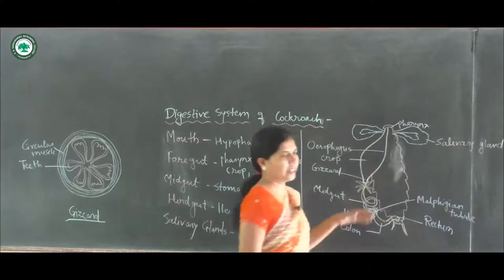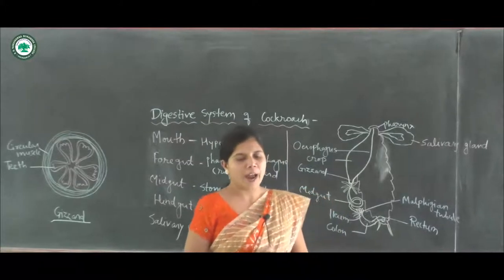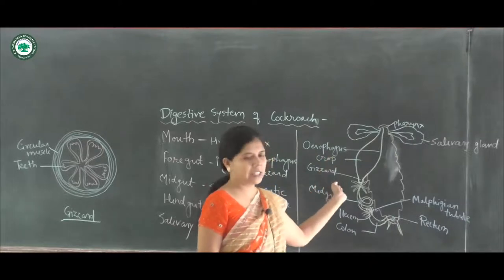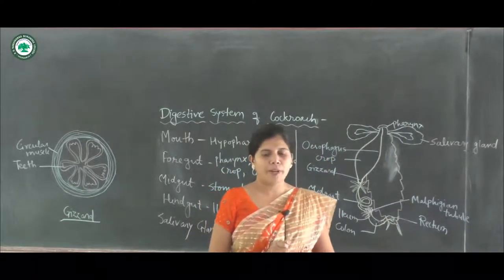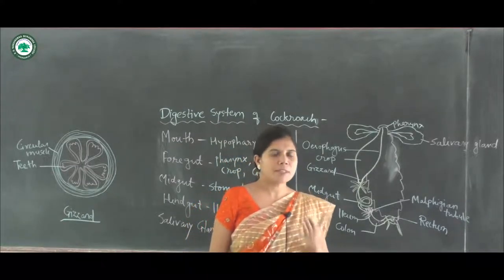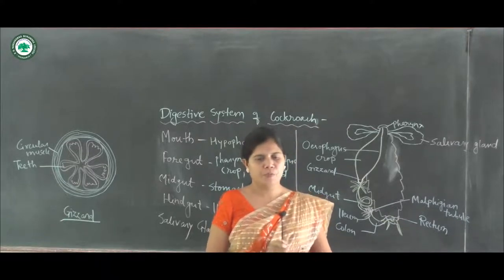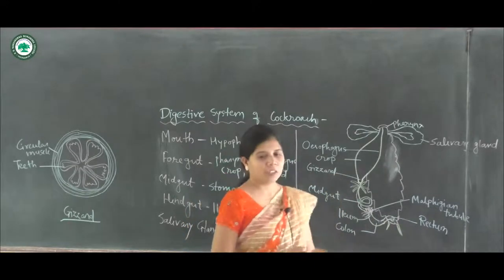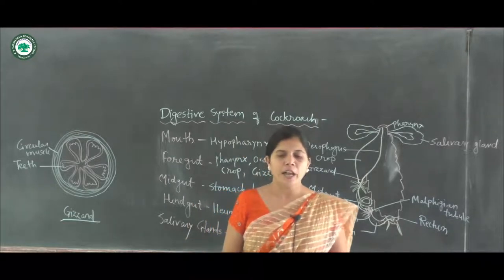The pharynx leads into the oesophagus. The oesophagus is a slightly long and narrow tube that opens into the crop. The crop is a large pear-shaped sac-like organ that temporarily stores food before sending it to the gizzard.